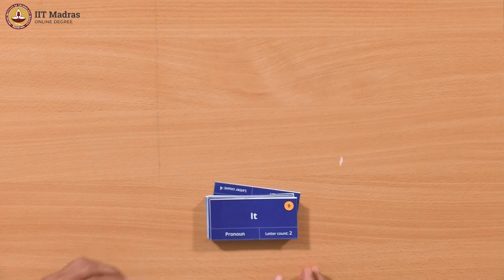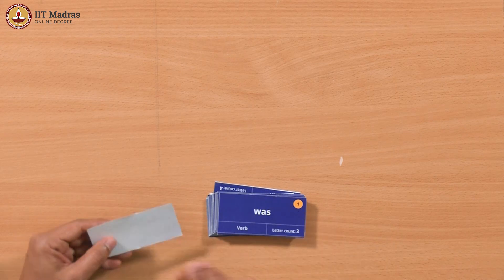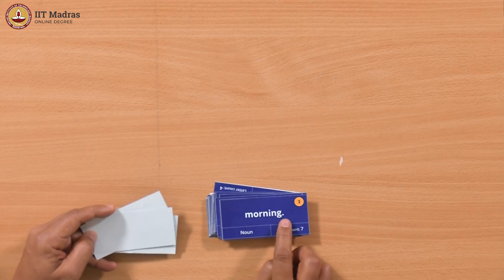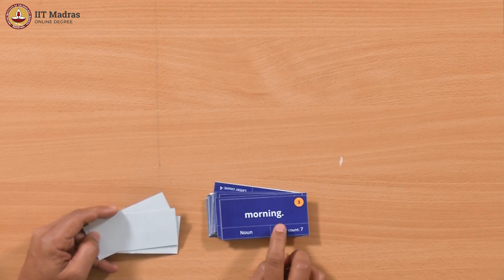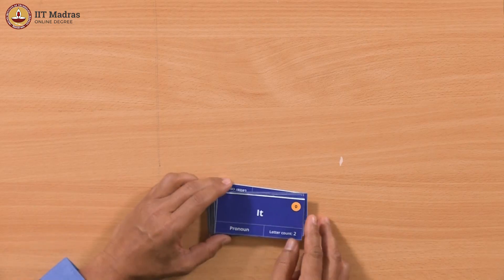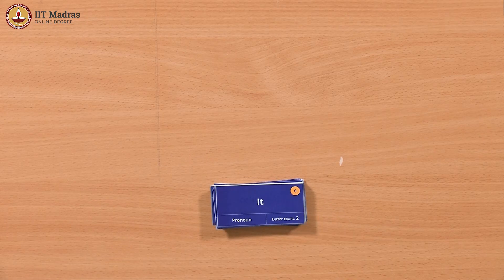Let us do something different now. Let us go to that paragraph that we had. If you remember, we wrote down the paragraph as one word per card. Now we have them in the same sequence, and what we had done was put the punctuation with the word. For instance, it was 'Monday morning' — this was the first sentence and the sentence ends with the full stop, so the full stop was kept with 'morning'. We can go through this and identify where the sentences end, provided it is in the correct order, which it is now.